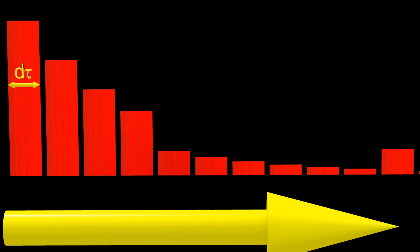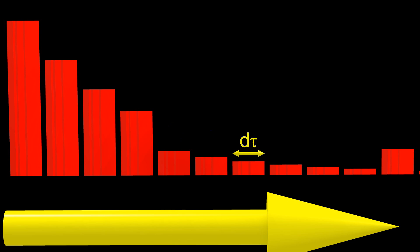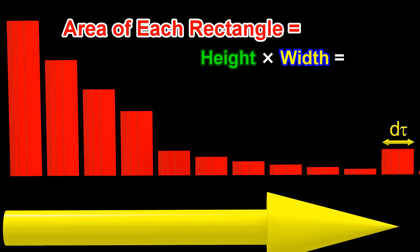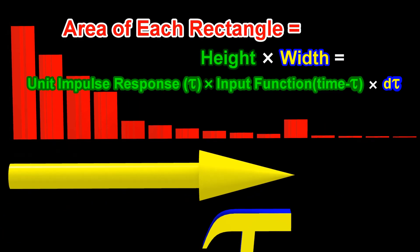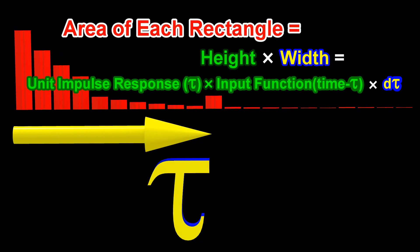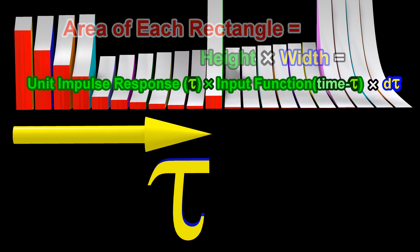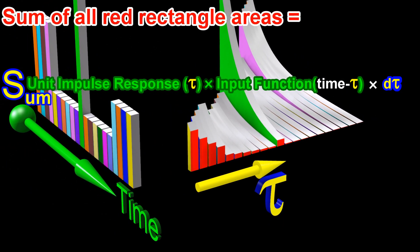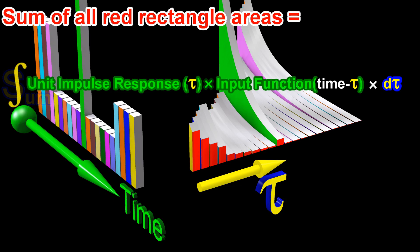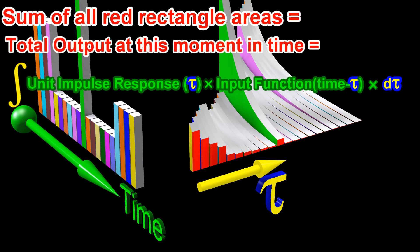The width of each rectangle is represented by d tau, and the value of d tau approaches zero. The area of each rectangle is its height multiplied by its width, which is given by the following formula. The sum of the areas of all the red rectangles is then represented as follows. This equation for the total area represents the value of the total output at this moment in time.